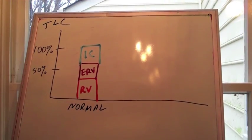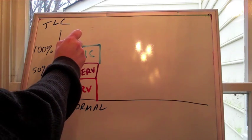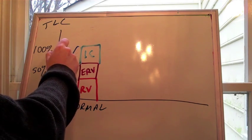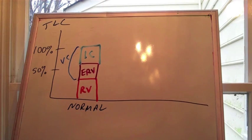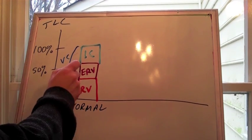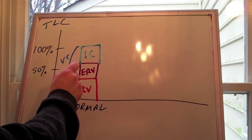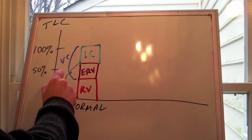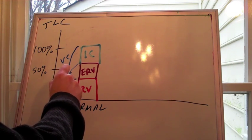All right. Total lung capacity. Your inspiratory capacity and your expiratory reserve volume make up your vital capacity. And that other stuff is your functional residual capacity.